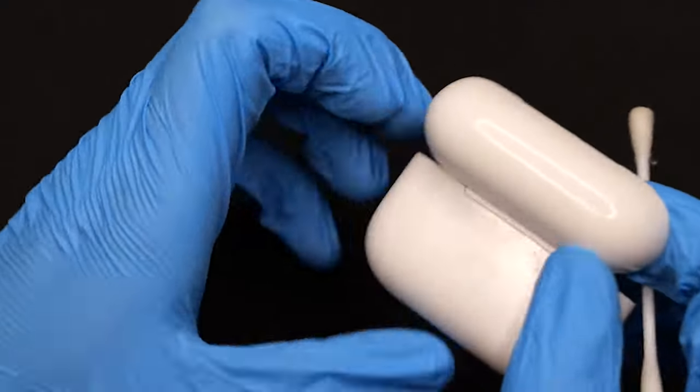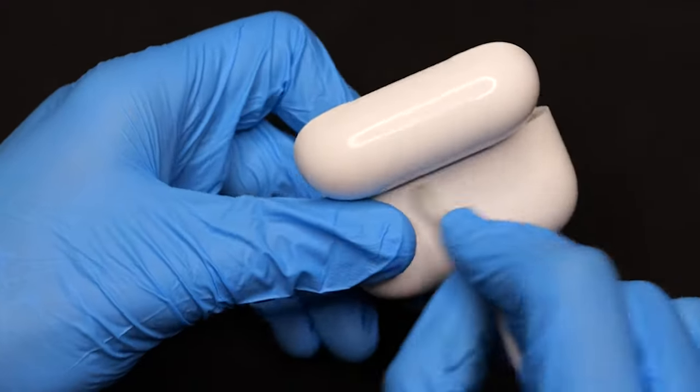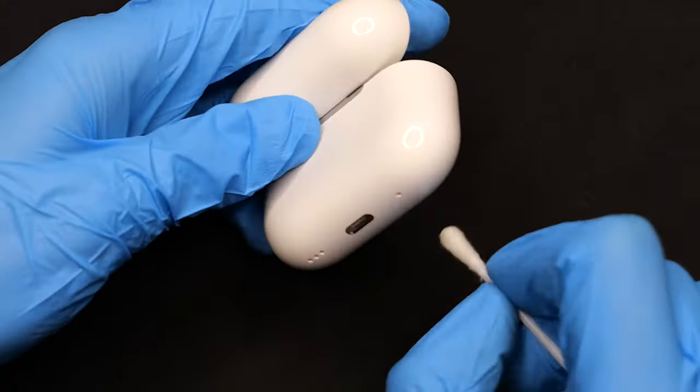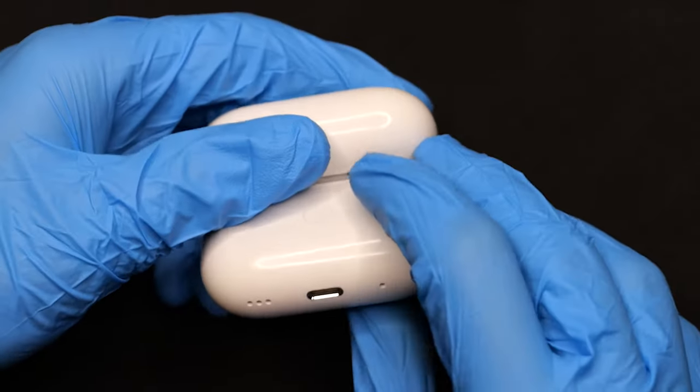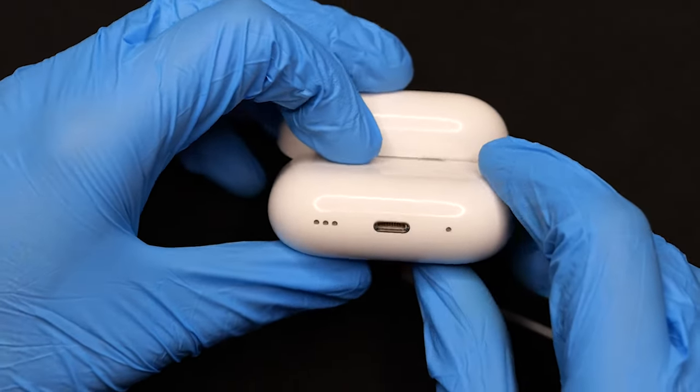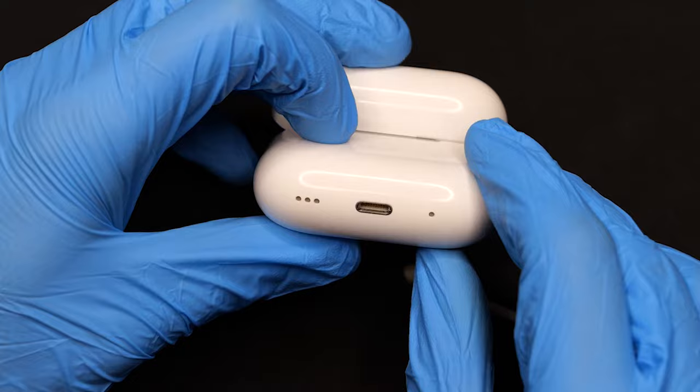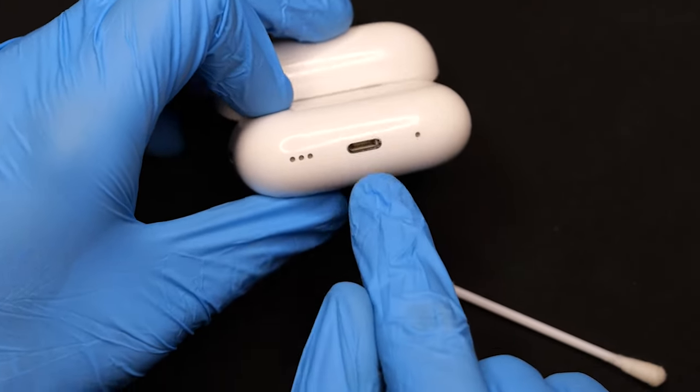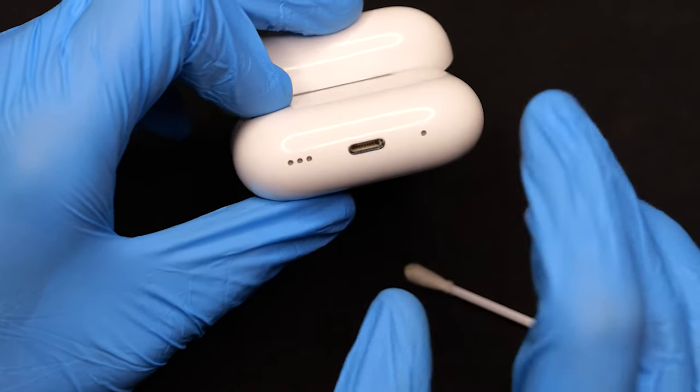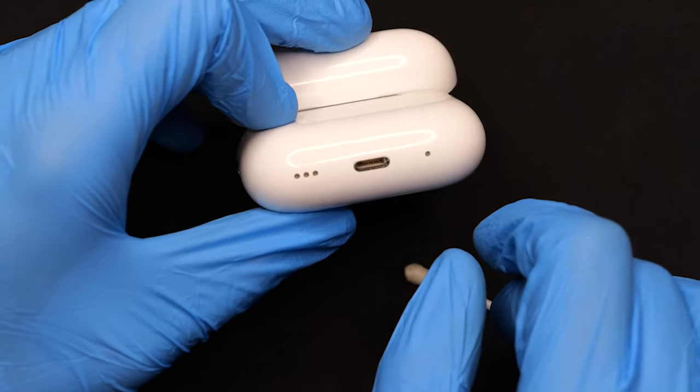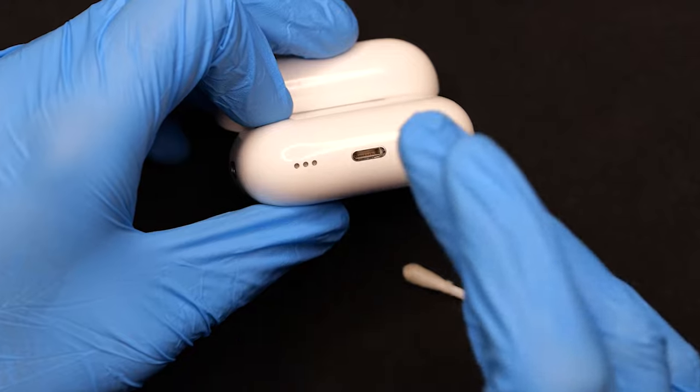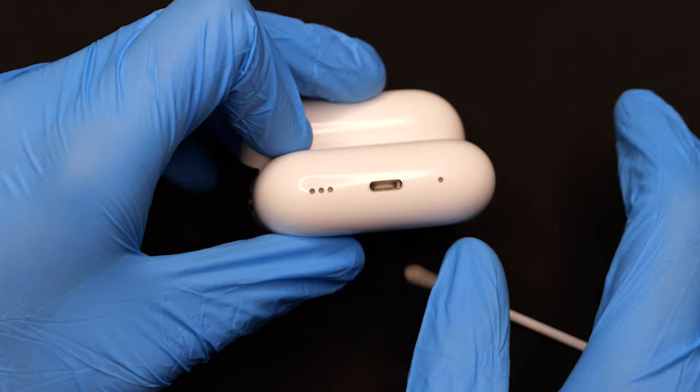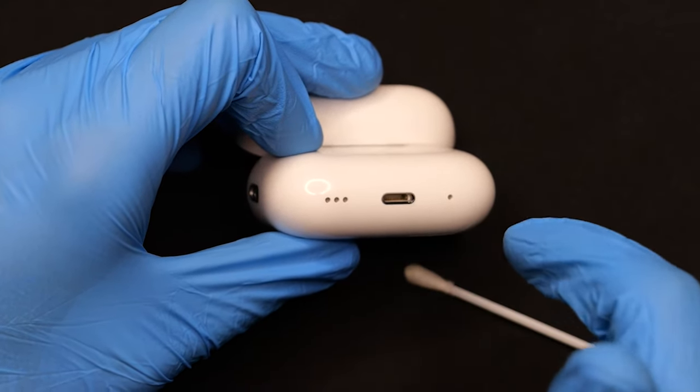Now we can flip the case over. If there's any dirt on the outside of the case, just go over that with the Q-tip. And then once you're at the bottom here, there are a few more places where dirt can collect. I have the second-gen AirPods, so I do have these speaker grills. There can oftentimes be lint or dust that collects in those. And then also in this charging port, if you put your AirPods in your pocket a lot or you have them in a bag, there can oftentimes be lint or debris or fuzz in that charging port. That can oftentimes be the cause of charging issues or if your charging cable isn't going in all the way. It's usually because there's dirt at the bottom of that port.